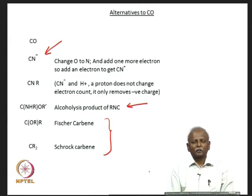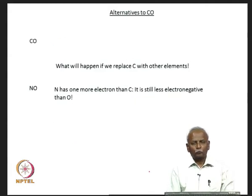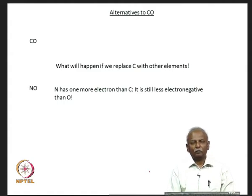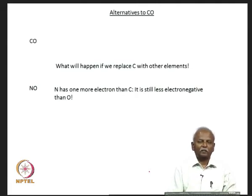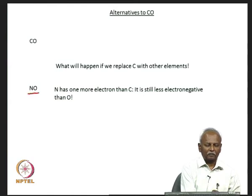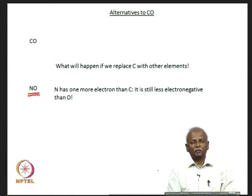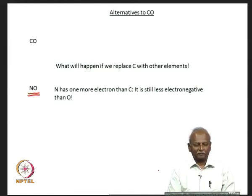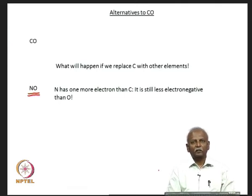Now, if we continue to do this, we will realize there is a limitation, and it might be useful to look at replacing carbon itself with another atom. Hence, we move on to nitrogen and we end up with nitric oxide. Nitric oxide is a very interesting molecule — it is in fact biologically relevant and has been studied extensively in the recent past. Nitric oxide has got one extra electron compared to carbon monoxide, which is the most useful ligand in organometallic chemistry.